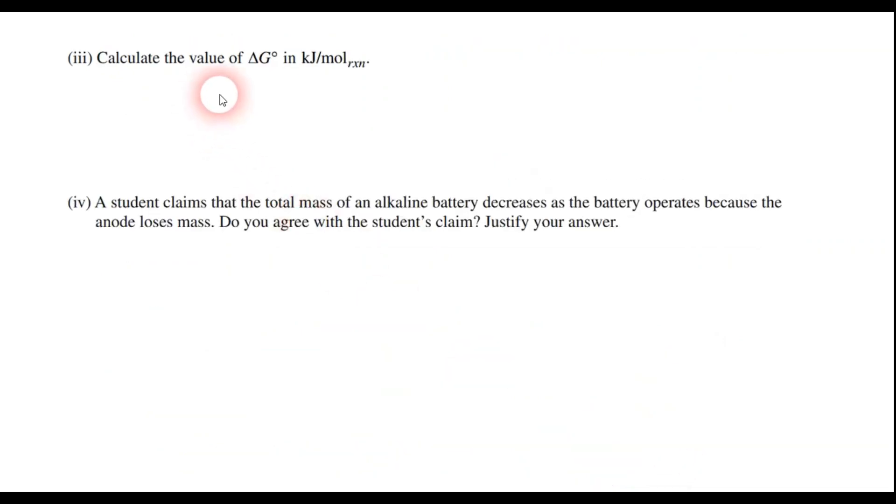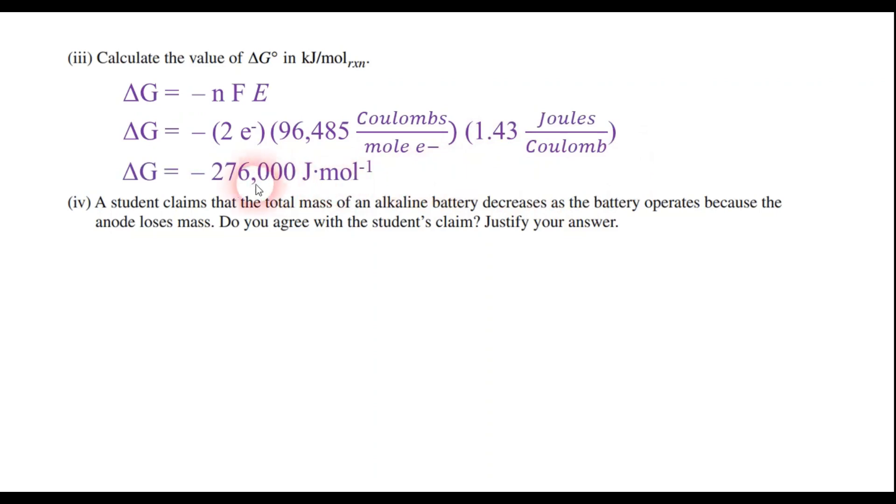Now in this next section, it says calculate the value of delta G. We have to remember that delta G equals negative nFE. So we're solving for delta G. And there are two electrons. And that two comes from the fact that we canceled out two electrons whenever we added everything together in that last step there. F is for Faraday's constant. And then E is the E cell that we just calculated in the last step. So when you multiply this together, we find that delta G is negative 276,000 joules per mole. Because volts are joules per coulomb. But the question says kilojoules per mole. So we have to divide that by 1,000 and get the answer of negative 276 kilojoules per mole in the reaction.